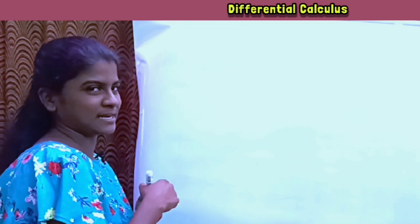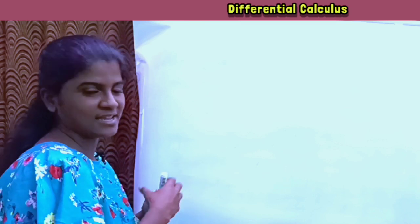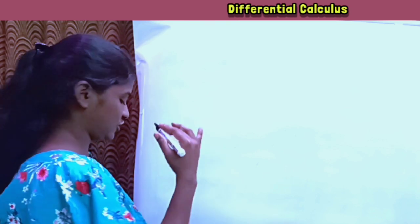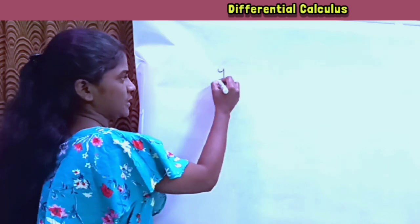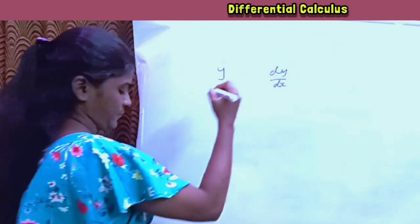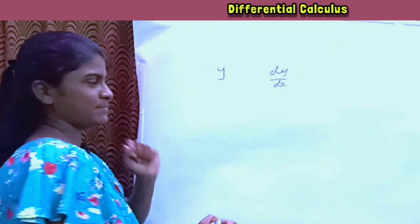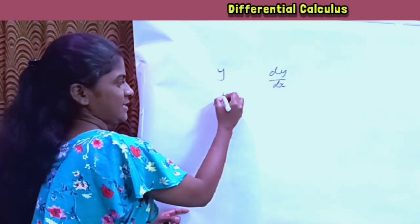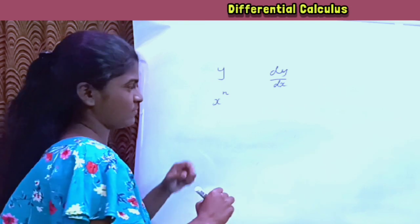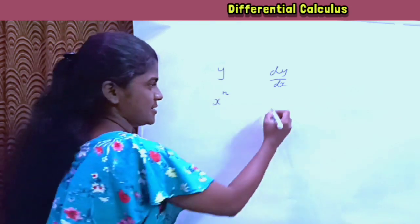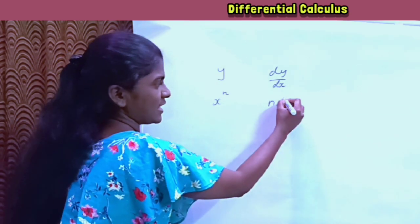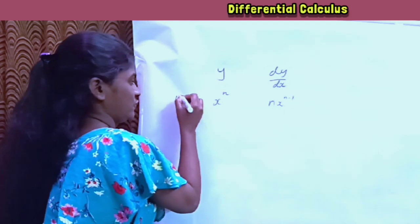If you are learning engineering, you will need to know how to differentiate. First, we look at y, dy by dx — differentiation. The first formula: x to the power of n. If we differentiate x to the power of n, the result is n into x to the power of n minus 1.